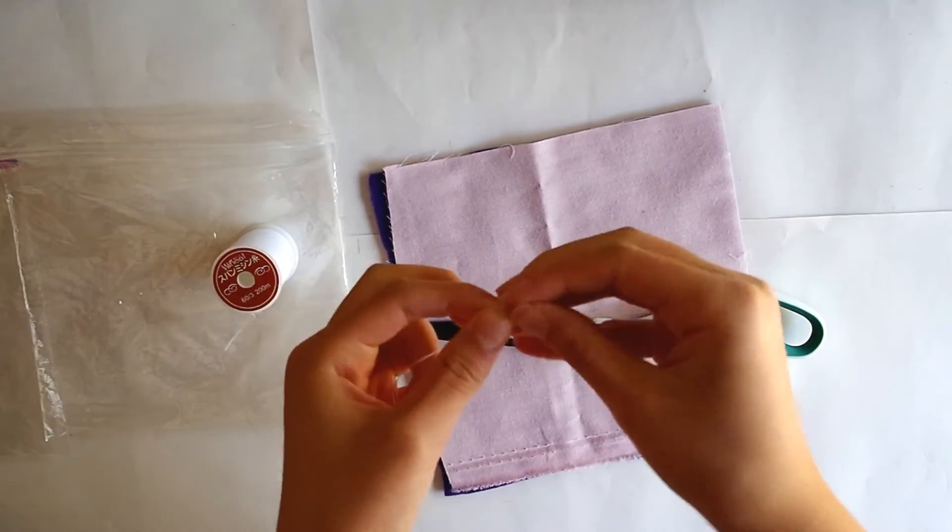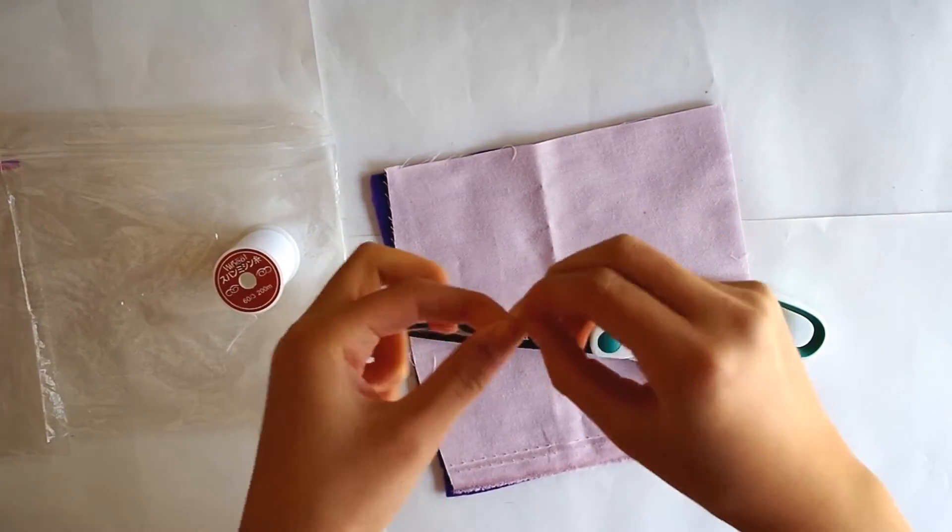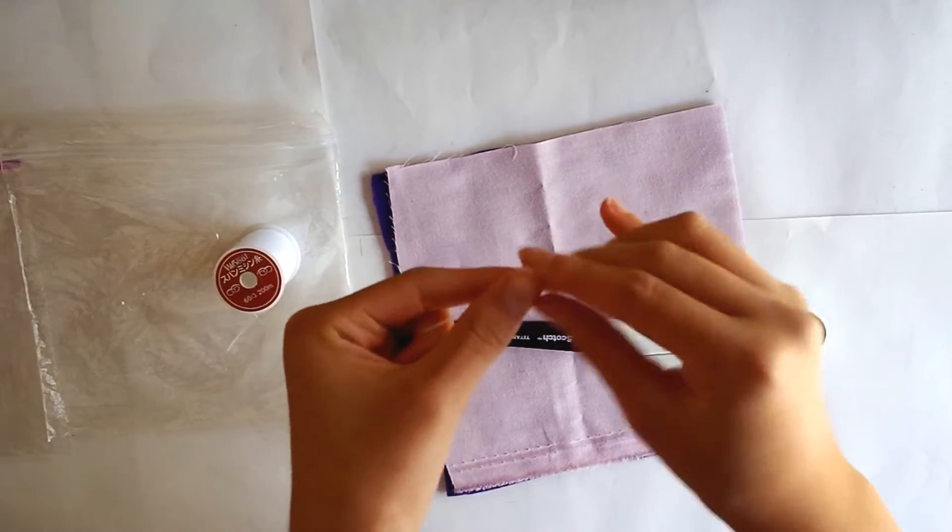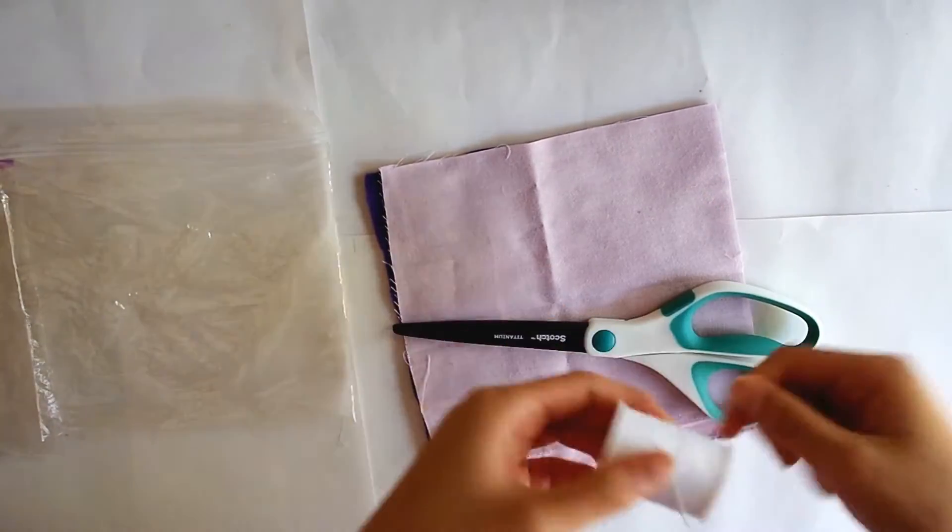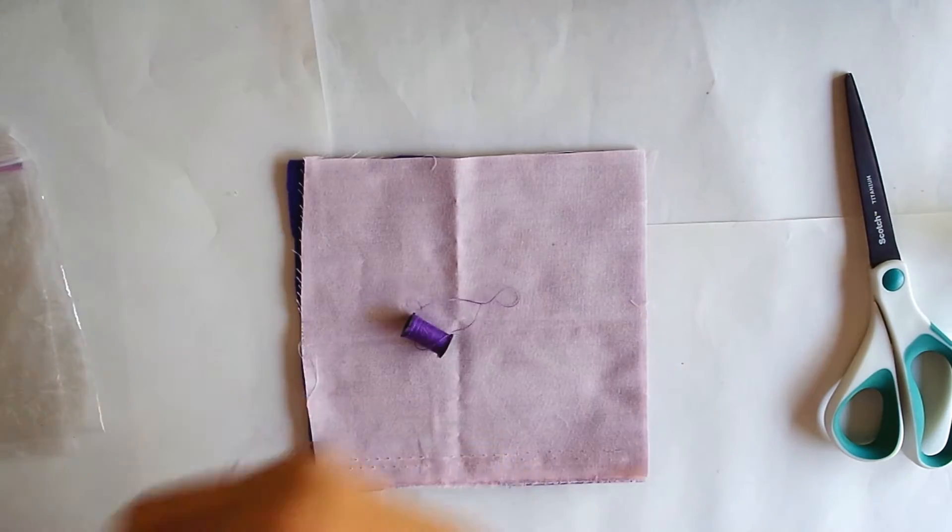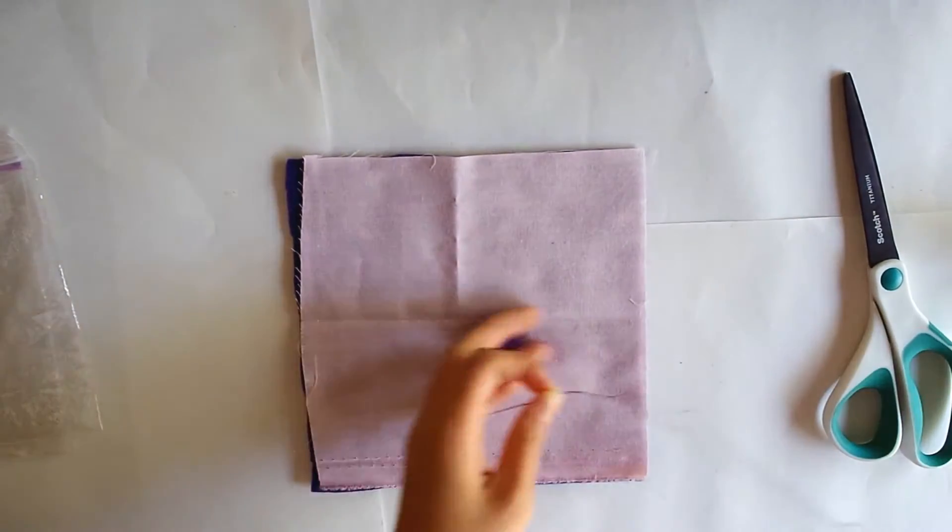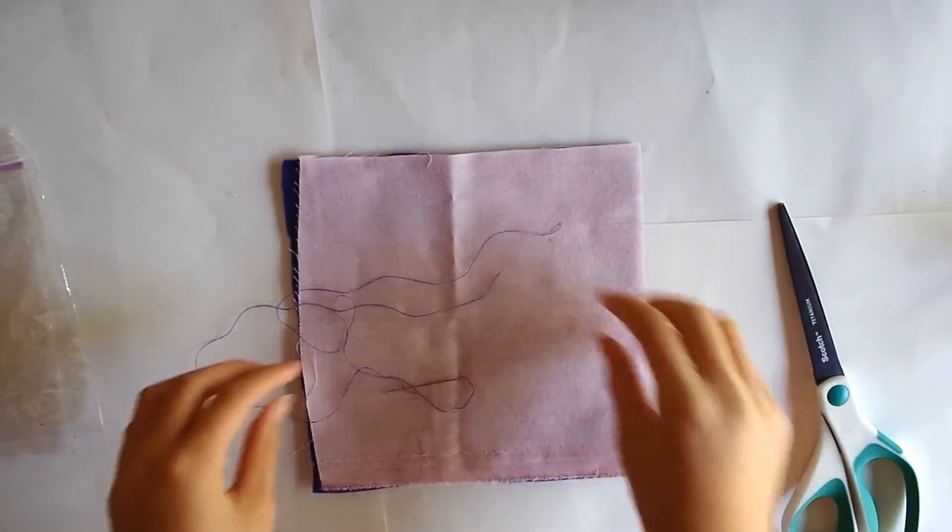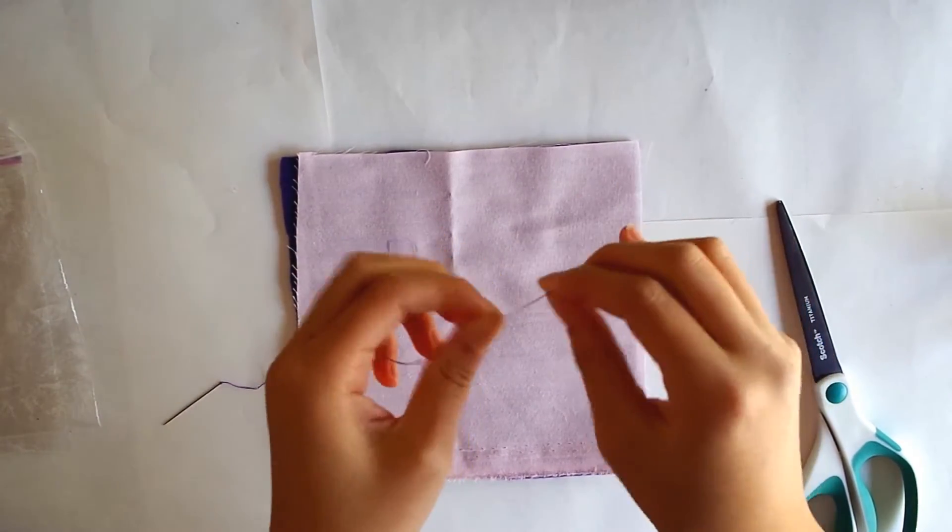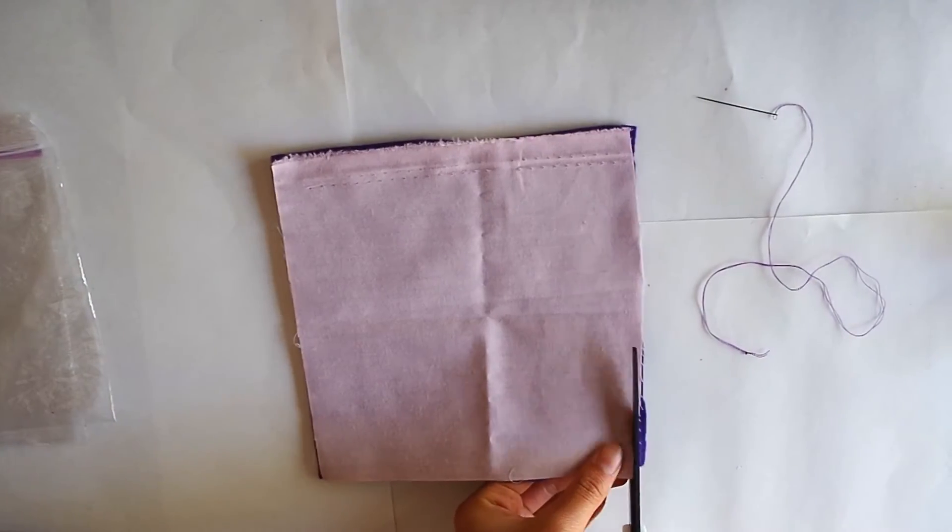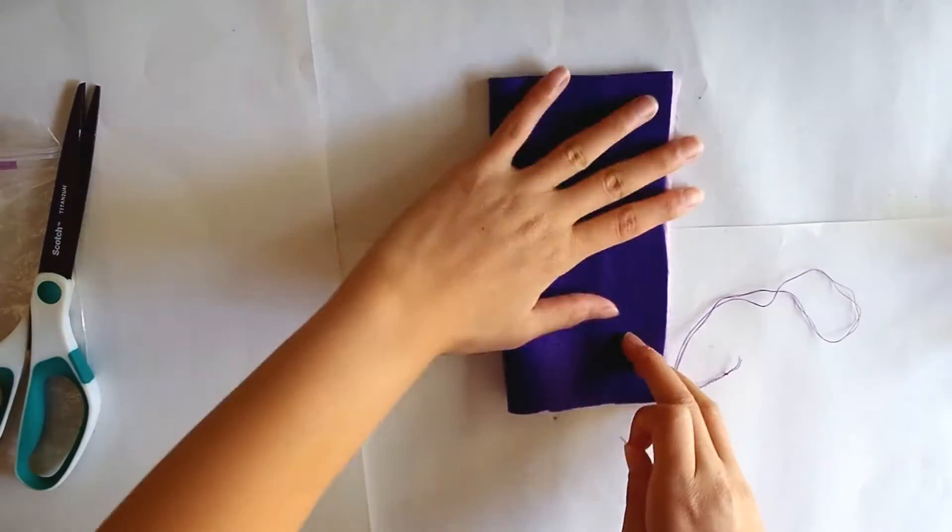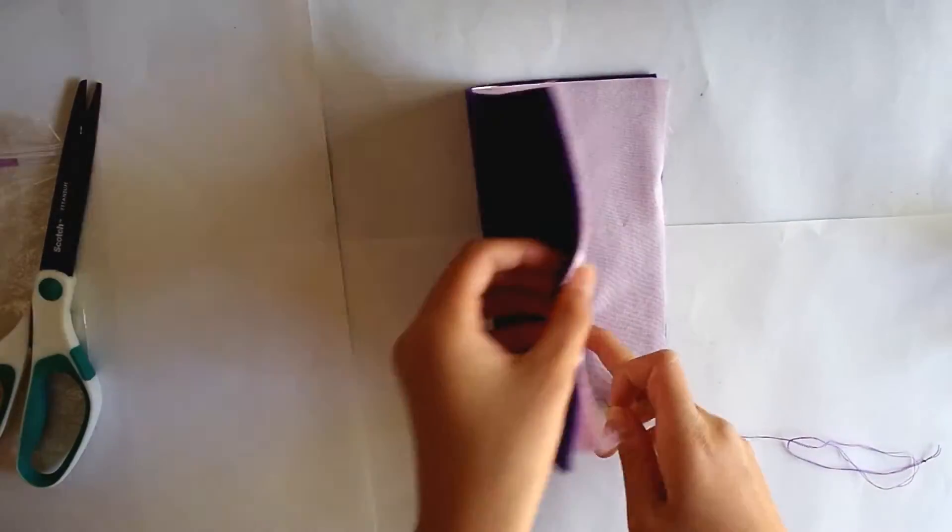Now you can see that I'm threading white thread, but this is actually useless right now, because you're actually going to need a thread color that matches with the outside fabric or felt of your pencil pouch. Now I've got my purple thread and I'm threading another needle. The white thread will come in handy though, so don't lose it or whatever. Now I am being extra picky and trimming the fabrics so they're exactly the same size. You obviously don't have to do this, but if you're a perfectionist then do it.